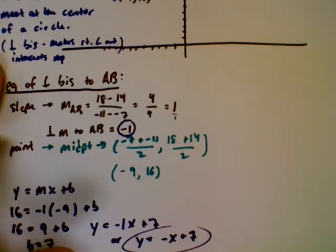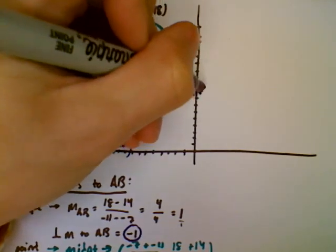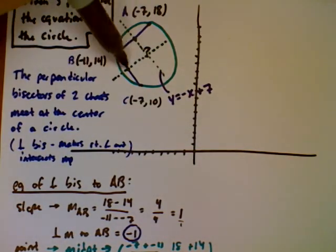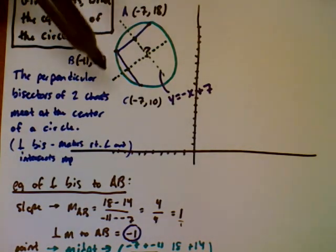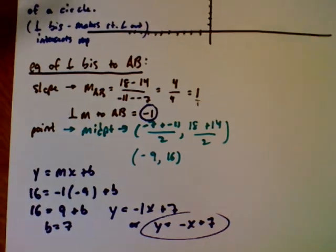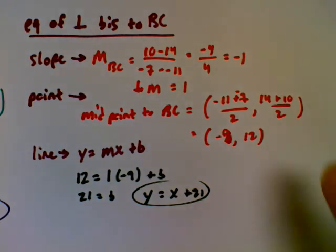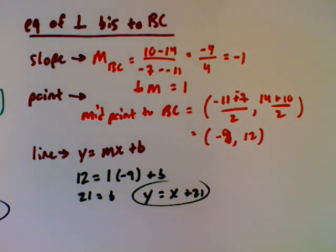Going back to the picture, the equation of this line is y equals negative x plus 7. Now I need to find the equation of the other perpendicular bisector. This would be a great time to pause and try to find it yourself, then check your work. The equation of the second perpendicular bisector comes out to y equals x plus 21.